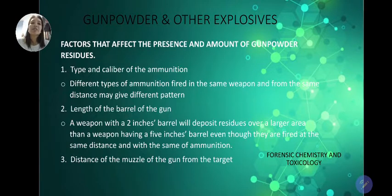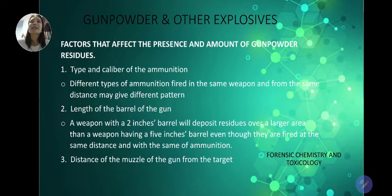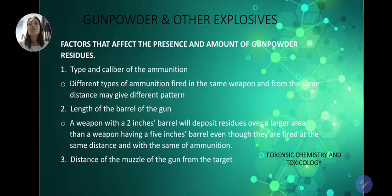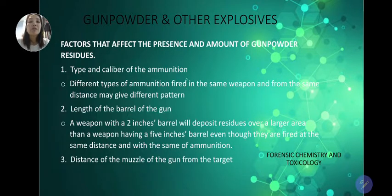There are factors that affect the presence and amount of gunpowder residues, especially during paraffin examination. In my experience, there are instances where someone insists they fired a gun but the paraffin examination result is negative for gunpowder residues, or conversely, someone denies firing but tests positive for gunpowder nitrates. These factors include: the type and caliber of ammunition — different types fired in the same weapon from the same distance may give different patterns.